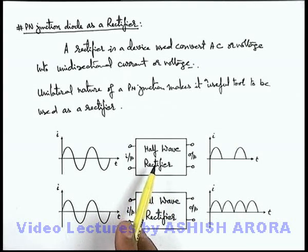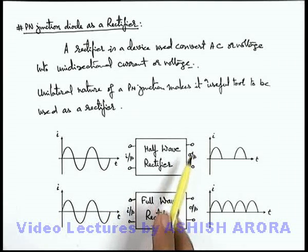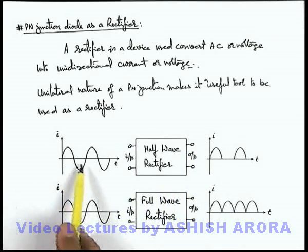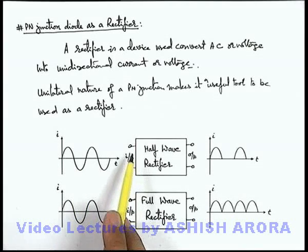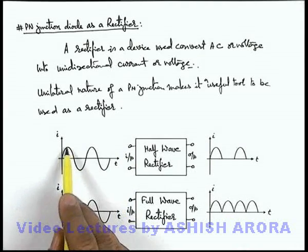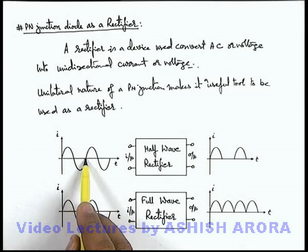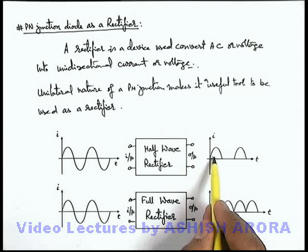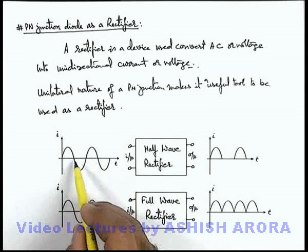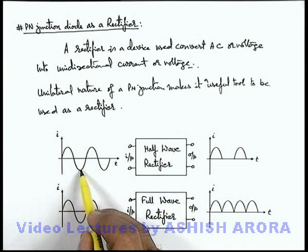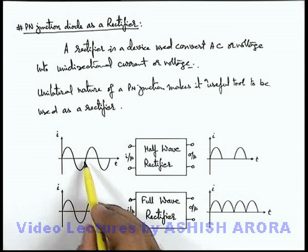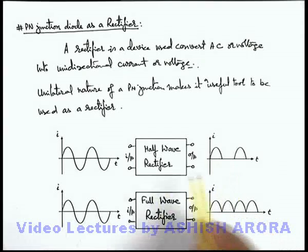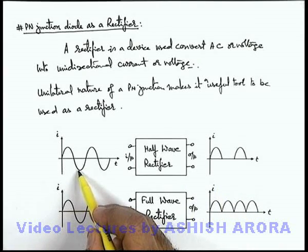In a half wave rectifier there are two input terminals and two output terminals. When an alternating current is supplied into the input terminals, in one cycle of this alternating current, only the positive half cycle is transferred to the output terminal. This rectifier blocks the negative half cycle of the alternating current, so no current flows in the output terminals corresponding to the negative half cycle of the input current.